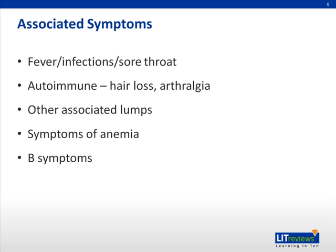Arthralgia, alopecia, anemia, fever, joint deformities, and oral ulcers can indicate an underlying autoimmune cause such as Kawasaki disease, rheumatoid arthritis, or systemic lupus erythematosus.